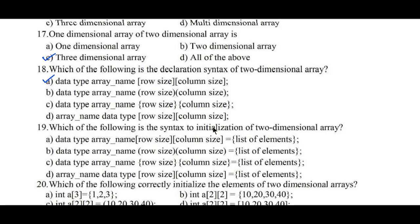Question number nineteen: which of the following is the syntax for initialization of a two-dimensional array? Option a) data type, array name, [row size][column size] = {list of elements}. Option b) data type, array name, (row size, column size) = list of elements. Option c) data type, array name, {row size, column size} = list of elements. Option d) array name, data type, [row size][column size] = list of elements. The correct answer is option a: data type, array name, inside the square bracket row size and column size, equals list of elements in curly braces.